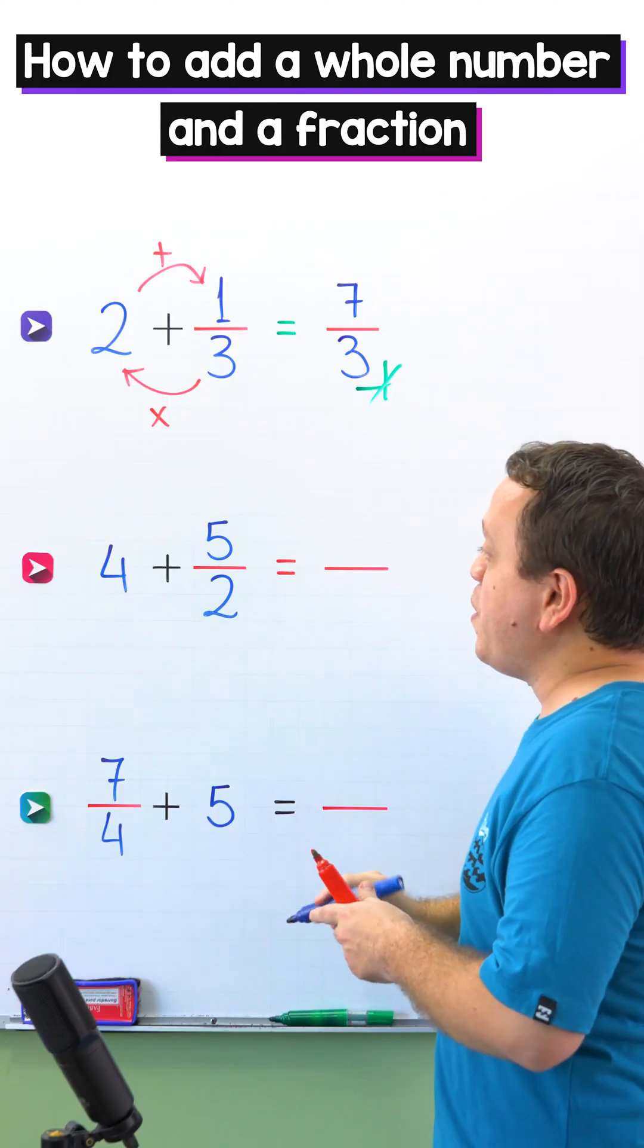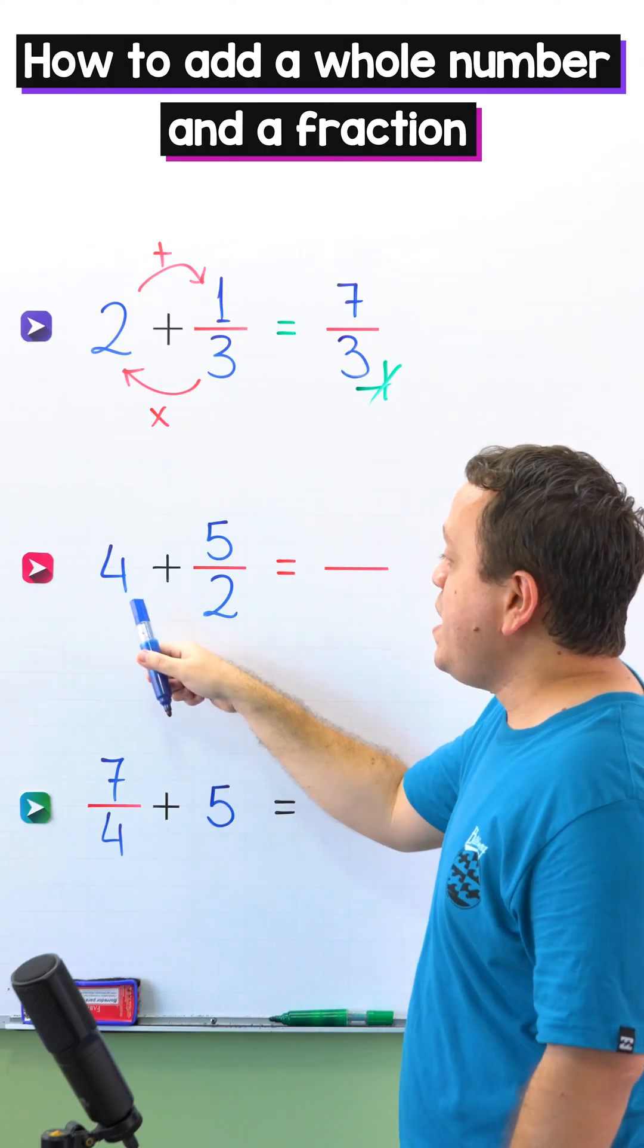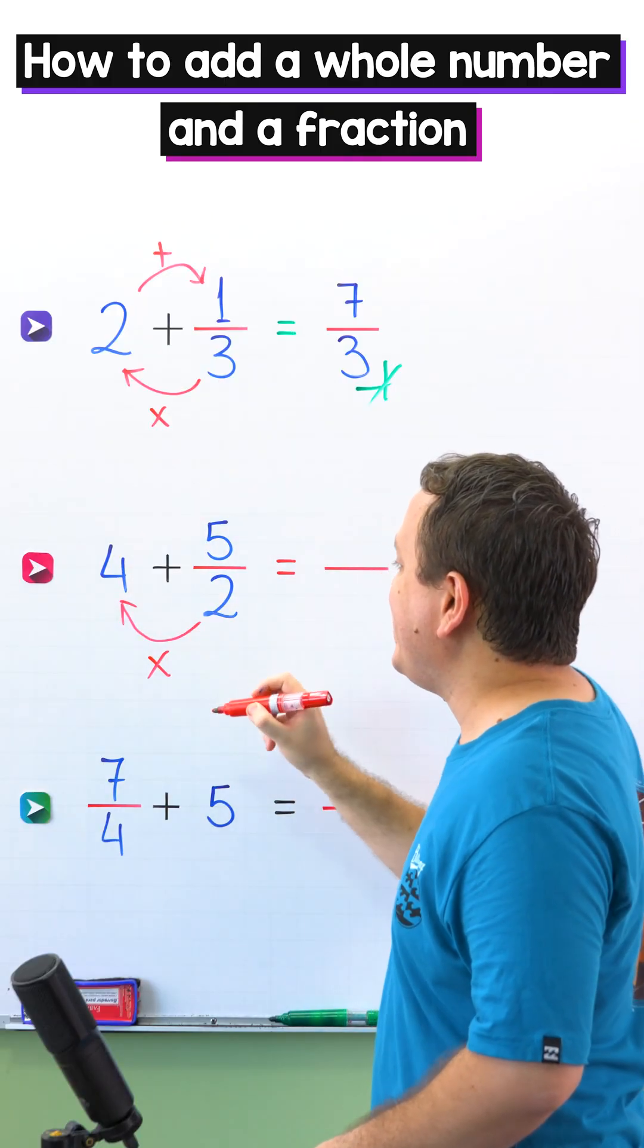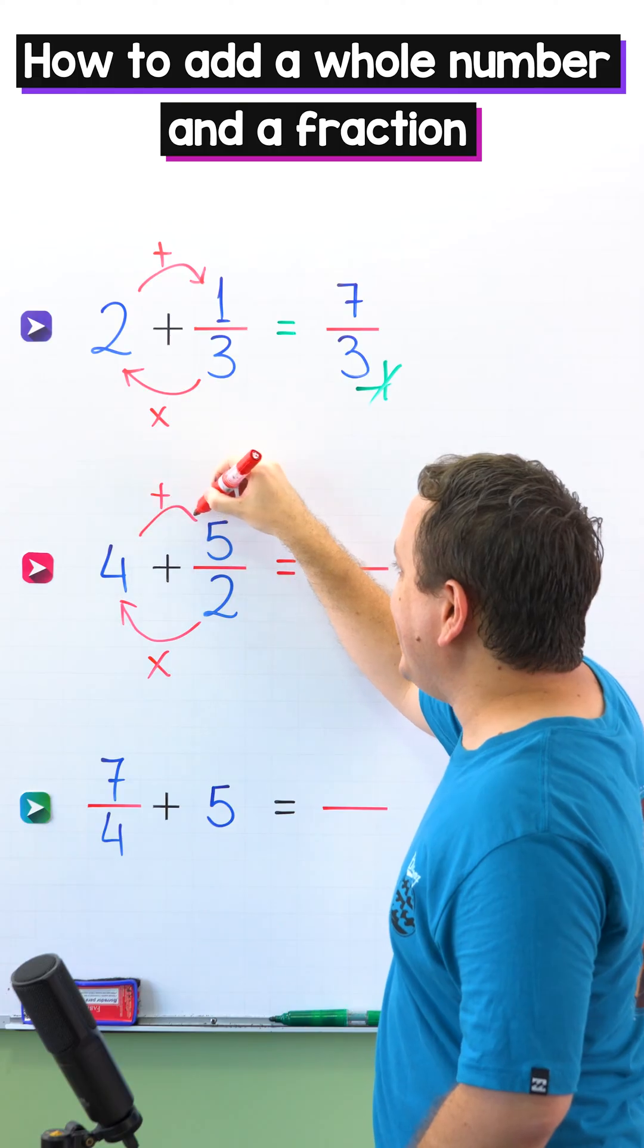In the second example, we need to add 4 plus 5 halves. To add a whole number and a fraction first, we multiply the denominator by the whole number. Then we add this result to the numerator.